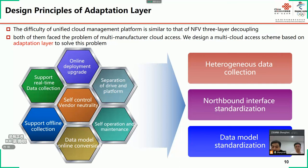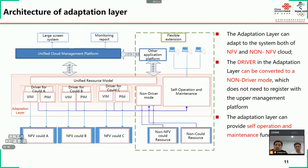Based on this design principle, we need to realize three points: one is the collection function of heterogeneous data in the adaptation layer; two is the standardization of the northbound interface; and three is the standardization of the resource data model. We can see the architecture of the adaptation layer from this picture. It designs a set of drivers for each cloud, and in the south direction, collects data from the cloud platform; in the north direction, it converts the collected data into a unified form.